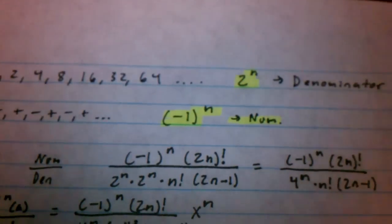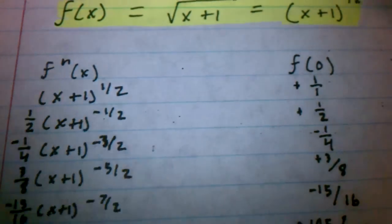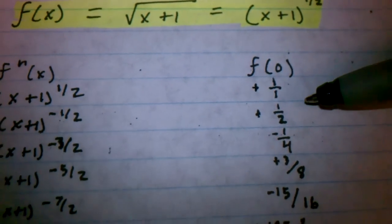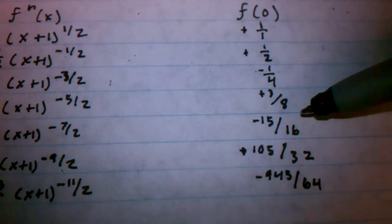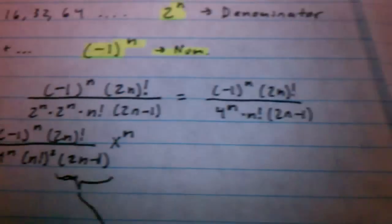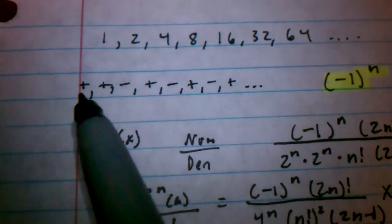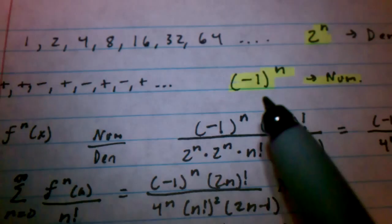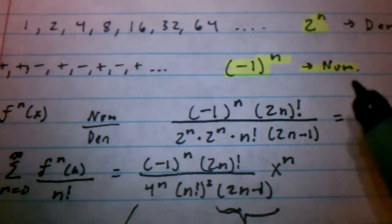And then, if we look back at our signs, it goes positive, positive, negative, positive, negative, positive, negative. So, except for the first two, they alternate. So, we're going to throw in this negative 1 to the n in the numerator.